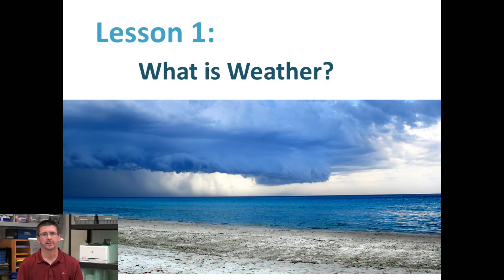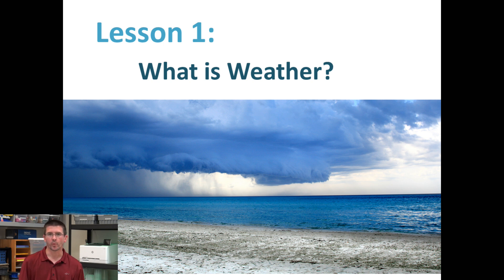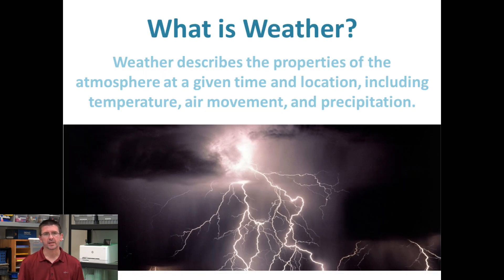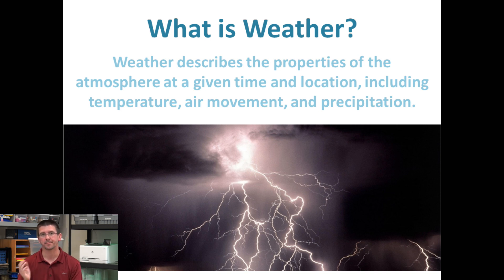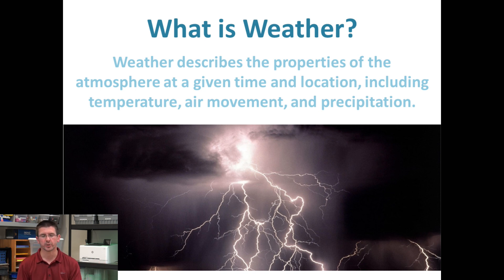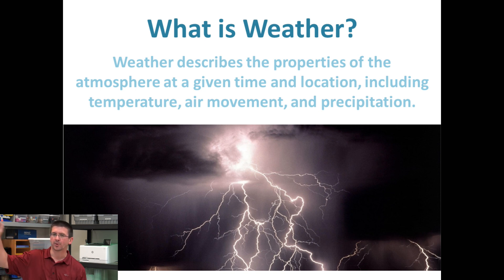Today we're going to begin our weather unit and start by talking about what weather is. When we talk about weather, we're basically talking about conditions in the atmosphere at a particular time in a particular place. There's also climate, which is the idea of long-term patterns of weather. But if we say what's the weather today, all we want to know is what's happening outside at a certain place — is it raining, is it sunny, is it cloudy?